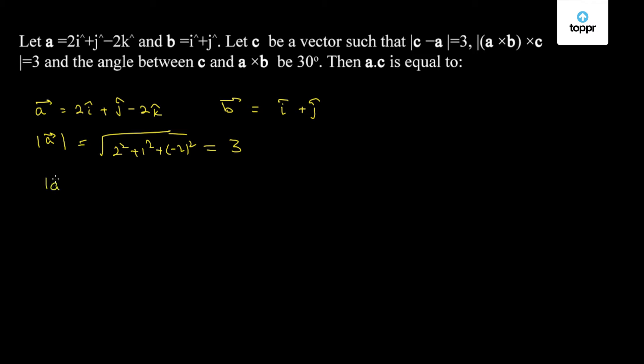Now, a cross b can be found out by the determinant of this matrix i cap j cap k cap. The coefficients of a vector that is 2i cap plus 1j cap minus 2k cap plus 0k cap. This comes out to be 2i cap minus 2j cap plus k cap.